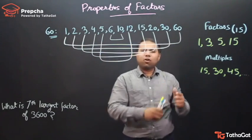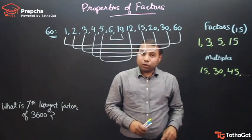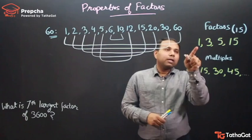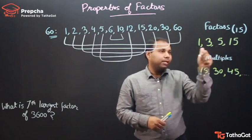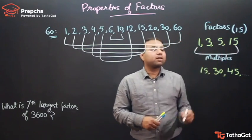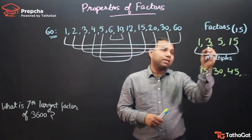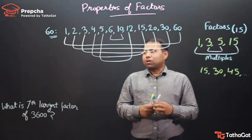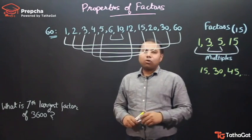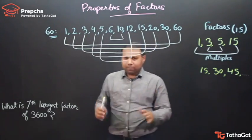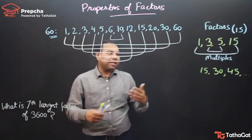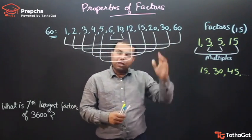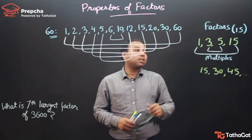Is this pattern true for 15 also? For 1, its partner should be 15 — yes, 1 and 15 are partners. Similarly 3 and 5, when multiplied they give 15. So we can conclude that all factors, when written in increasing or decreasing order, appear in this pairing pattern where the first and last, second and second-last, third and third-last, and so on, when multiplied give the number itself.